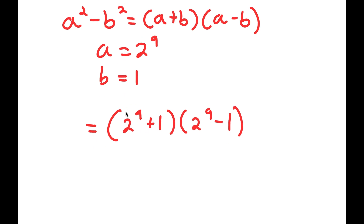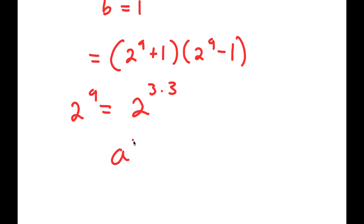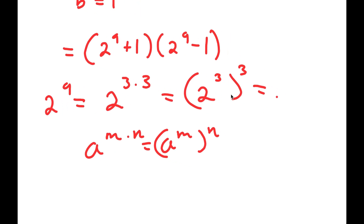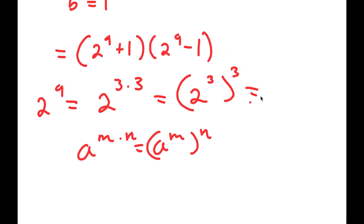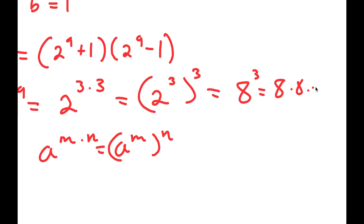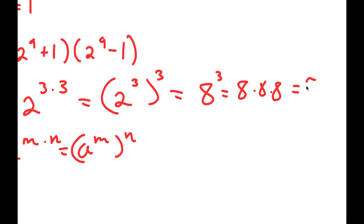Now, what is 2 to the power of 9? Well, 2 to the power of 9 is equal to 2 to the power of 3 times 3. And remember, if I have something in the form a to the power of m times n, this is equal to a to the power of m to the power of n. So this is the same thing as 2 to the power of 3 to the power of 3. What is 2 to the power of 3? 8. Meaning this is equal to 8 to the power of 3, which is equal to 8 times 8 times 8, which is equal to 512.